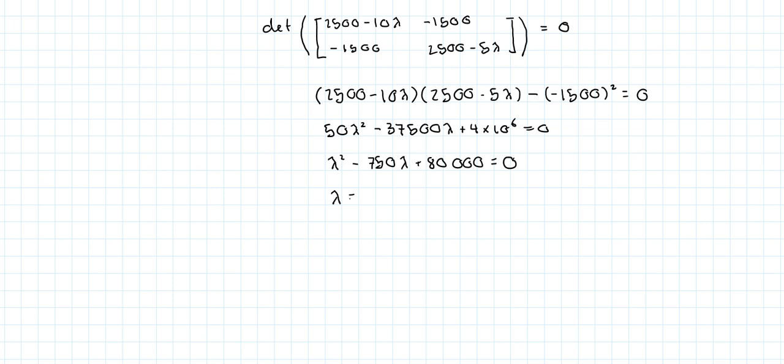We're going to find that the lambda values are equal to—I'll just write the formula out. I know that everyone knows it, but whatever. That's equal to minus b plus or minus square root of b squared minus 4ac over 2a. So 750 plus or minus square root of 750 squared minus 4 times 1 times 80,000, and all of that divided by 2 times 1.